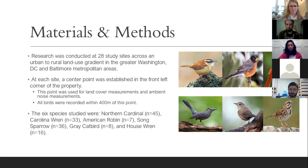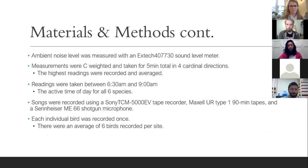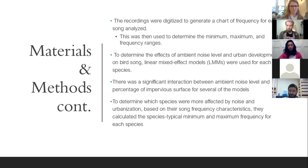The ambient noise level was measured with an EXTEC 407730 sound level meter. Measurements were C-weighted and taken for five minutes in total in the four cardinal directions, and the highest readings recorded were then averaged. Readings were taken between 6:30 and 9 in the morning because that was the active time of day for all six study species. Songs were recorded using a Sony TCM 5000 EV tape recorder, Maxell UR type 1 90-minute tapes, and a Sennheiser ME66 shotgun microphone. Each bird was recorded once with an average of six birds per site. The number of songs recorded from each bird ranged from 2 to 20.